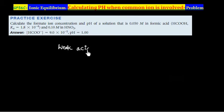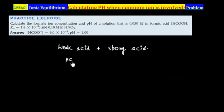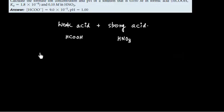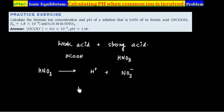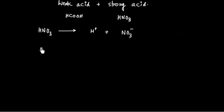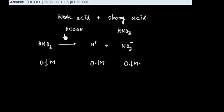We have a weak acid plus a strong acid solution. HCOOH is a weak acid and HNO3 is a strong acid, so it will be 100% dissociated. HNO3 has an initial concentration of 0.1 M, giving us 0.1 M of H+ and 0.1 M of NO3−.